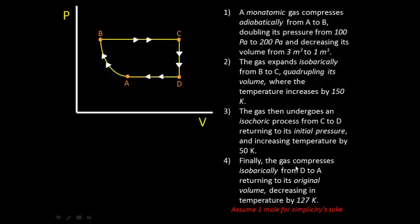And finally, step 4: the gas compresses isobarically from D to A, which is this part of the PV diagram, returning to its original volume and decreasing in temperature by 127 Kelvin. For simplicity's sake, let's assume it's only one mole of gas undergoing the cyclic process.